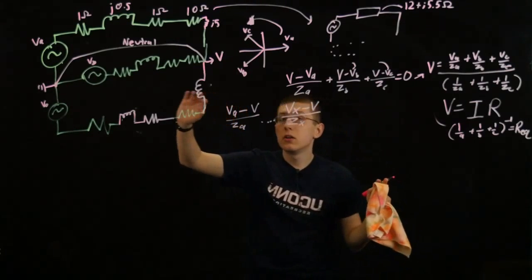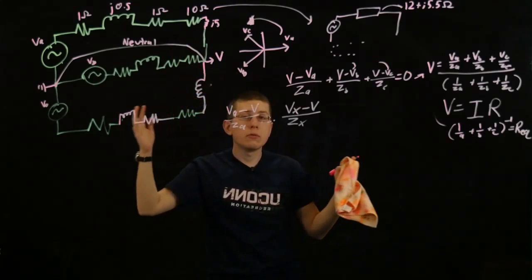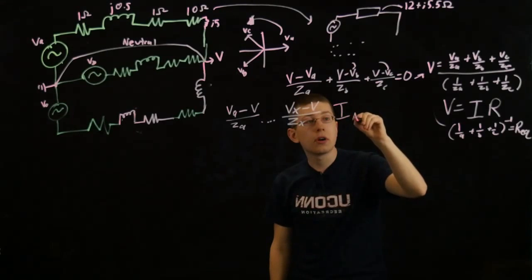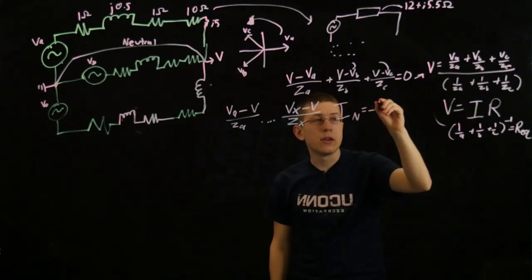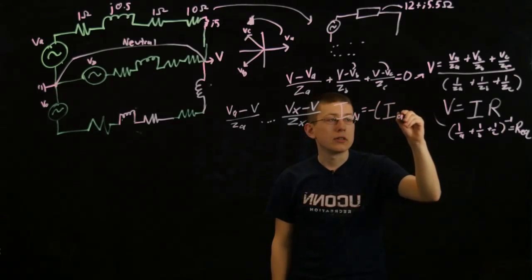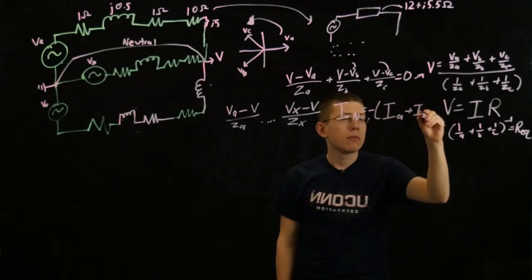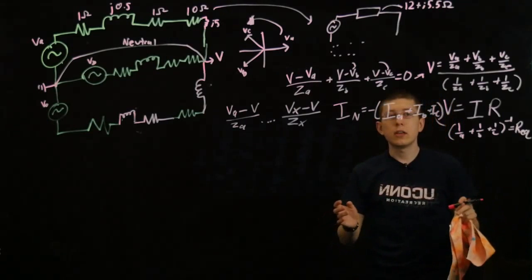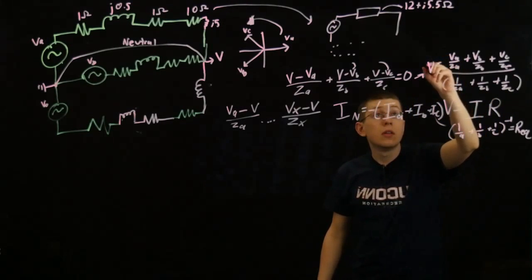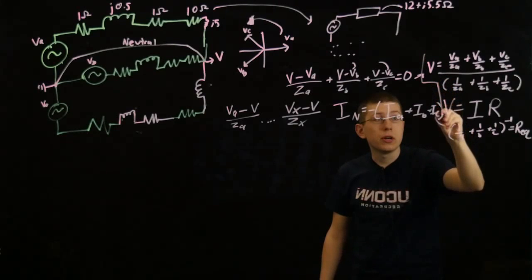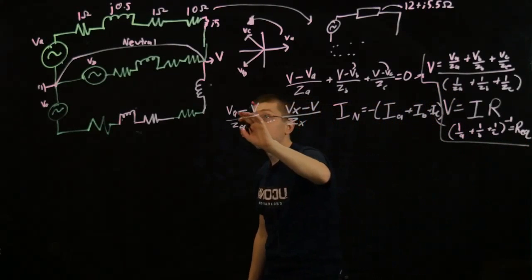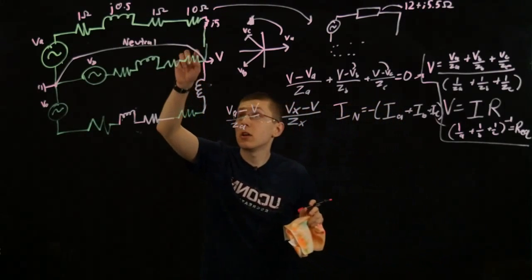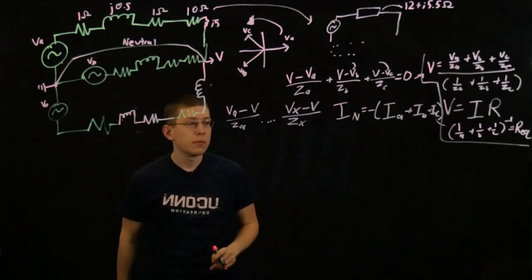And once we have these three currents, we can find the neutral line current, which is a very simple calculation. Our neutral current is just equal to the negative of the sums of the three currents, which makes sense because if in a perfect world, in a perfect situation, all of these currents were equal, it would give us zero neutral current. But if they're not equal, we'll have some current flowing backwards this way.